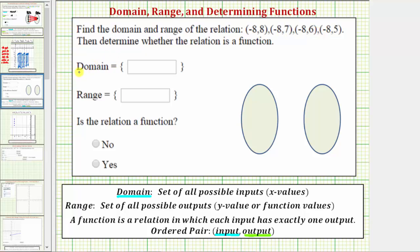So the domain of the given relation will be negative eight. Notice how for each ordered pair the input is negative eight, and therefore the domain is the set containing the value of negative eight.